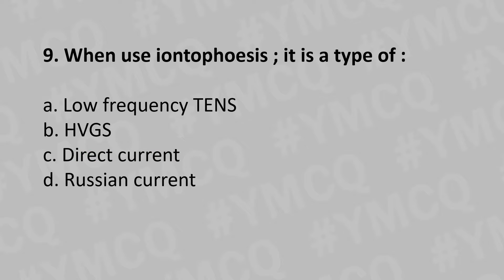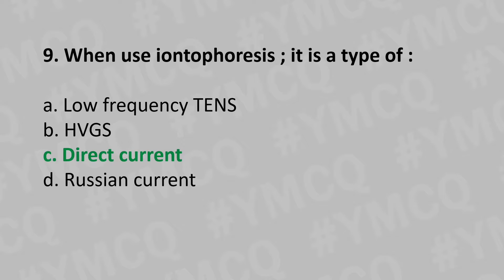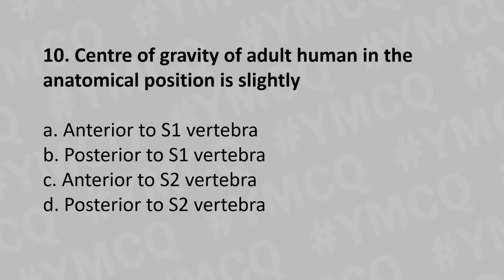When you use iontophoresis, it is a type of: Option A: Low frequency TENS, Option B: HVGS, Option C: Direct current, Option D: Alternating current. And the answer is Option C: Direct current. Moving to our tenth question.